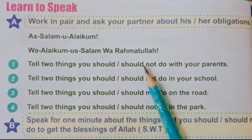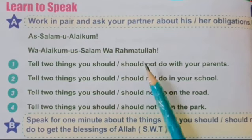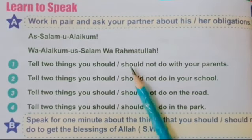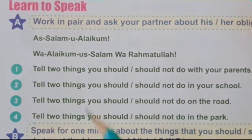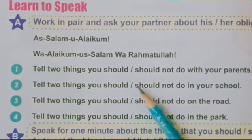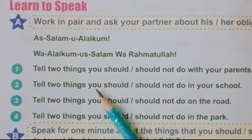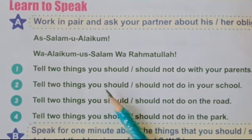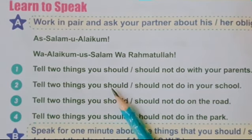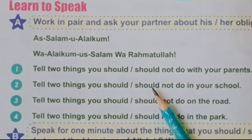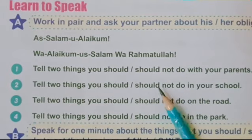Excellent! Do you know the meaning of disobey? Disobey means not to listen to your parents — na-farmani karna. Next: tell two things you should and should not do in your school. I should finish work in time at school. I should share my lunch with my friends. I should not waste time at school. I should not fight with my friends at school.